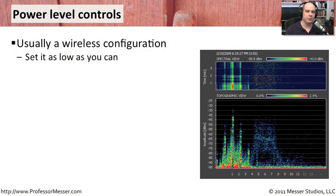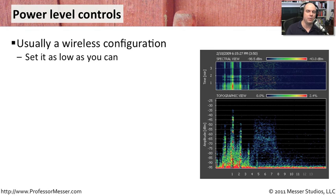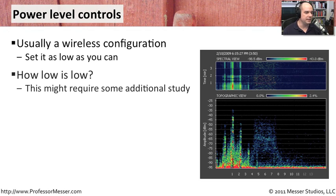A feature that can really help you with security in your wireless access point configuration is power control. You may have controls over how much power you put out on the wireless access point. Ideally, you would set this to go as low as you possibly can and still have people communicate. That way, you aren't sending your signal out to the parking lot where other people may be able to hear what's going on on your wireless network.